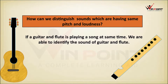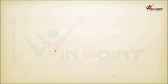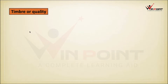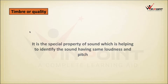If a guitar and flute are playing a song at the same time, we are able to identify the sound of guitar and flute. This special property is known as timbre, or quality of sound. It is a special property of sound which helps to identify sounds having same loudness and same pitch.